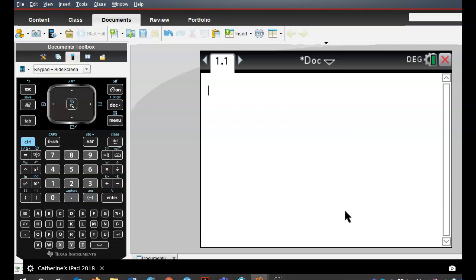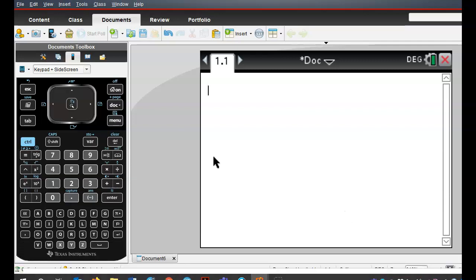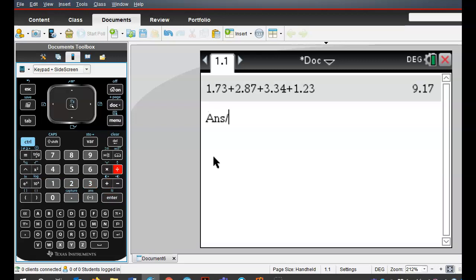So getting your CAS with these figures, so 1.73 plus 2.87 plus 3.34 plus 1.23 divided by 4. So that's the quarterly average for 2016.